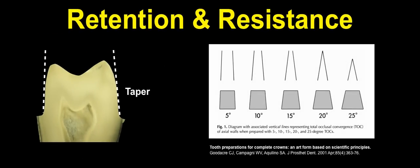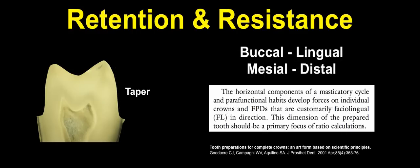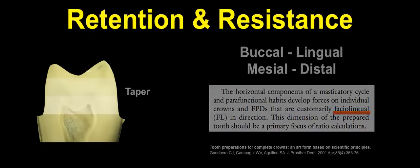When looking at the tooth, we talk about the taper — the inclination between the actual walls of our preparation. Looking at famous publications by Gutteridge, Campagni, and Colino, Campagni was the ex-director of the program at Ohio State. We know it's very important that for the facial-lingual aspect of our preparation to be as parallel as possible. Mesodistally, since we have adjacent teeth and contact points, the tooth cannot tip as easily. But facial-lingually, since we have the cheek or the tongue and no solid stop, it's very important to have our preparation as parallel as possible in the facial-lingual aspect.